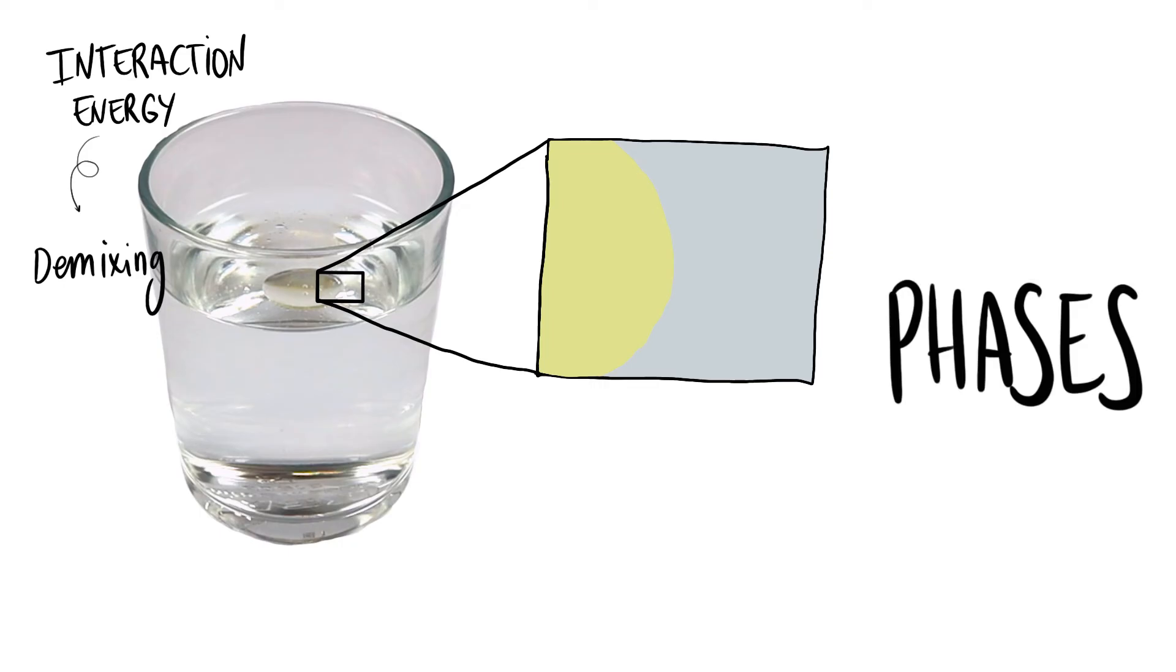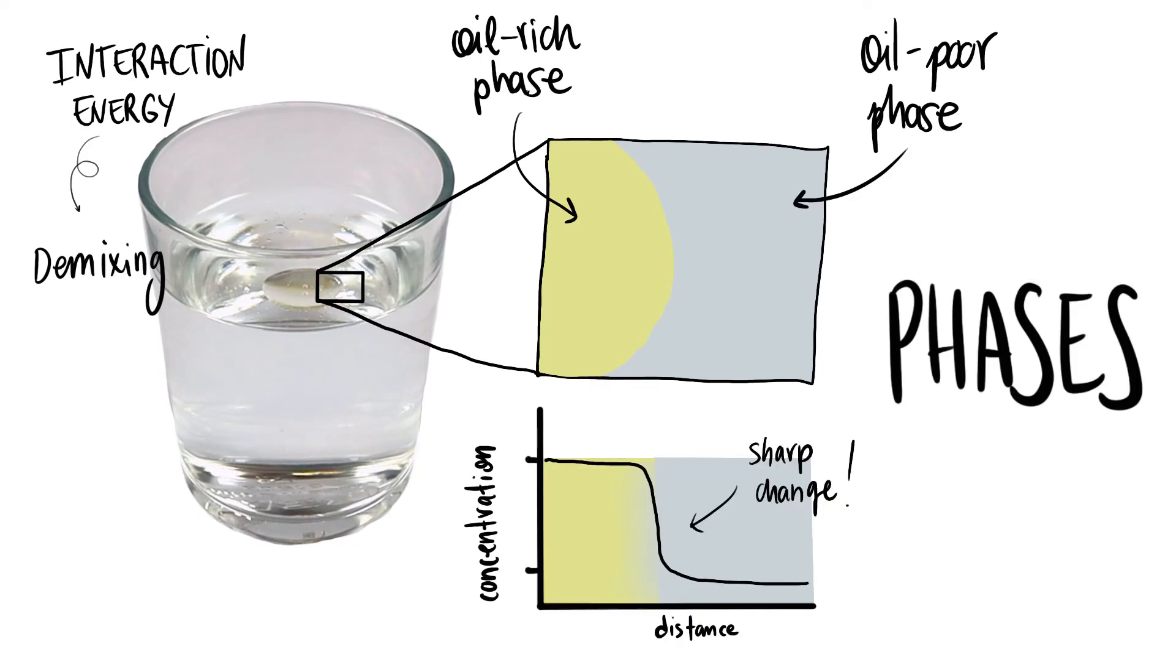In the example, there is an oil-rich phase and an oil-poor phase. In other words, there is a sharp change in oil molecule concentration across the surface of the droplet, which defines the location of the interface.